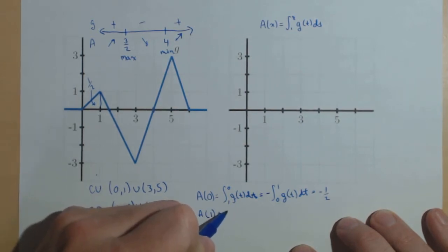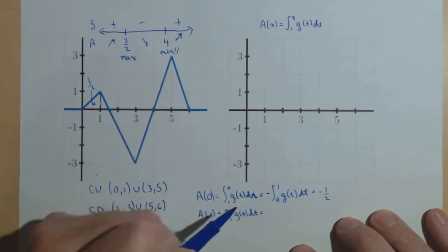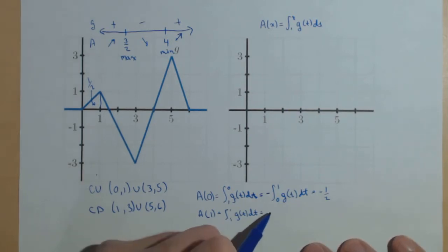Now, a of 1 is going to be the integral from 1 to 1 of g of t dt. And we know, without doing any work from our properties of integrals, that that has to be 0 if the limits are the same.